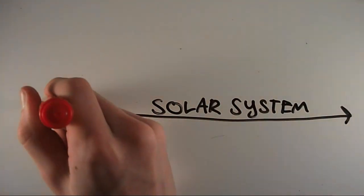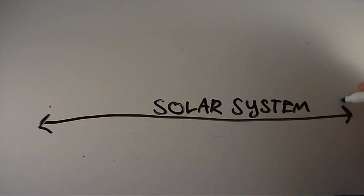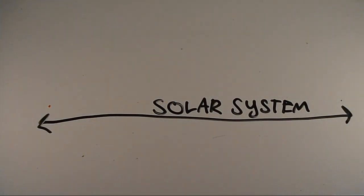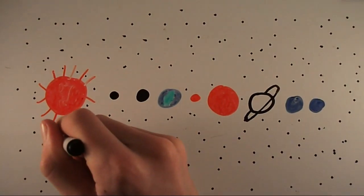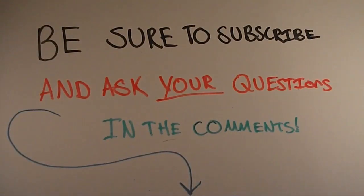If I was to fit the whole solar system onto this whiteboard, the sun would need to be less than one tenth of a millimeter to fit all the other planets in. Our solar system is a lot bigger than you might think. So be sure to subscribe and ask your questions in the comments below.